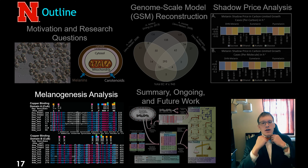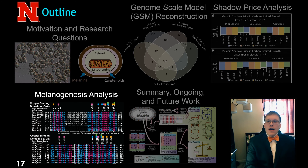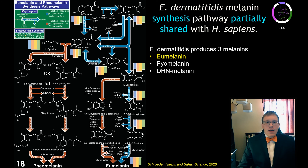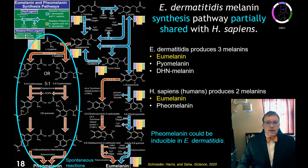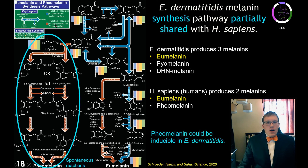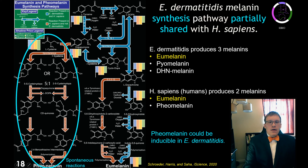Looking more specifically at melanogenesis, part of the pathway — specifically eumelanin production — is shared between humans and Exophiala. Humans produce two kinds of melanins: eumelanin and pheomelanin. Our modeling results suggest that pheomelanin could be inducible in Exophiala, because all reactions leading to pheomelanin from dopaquinone, which is already produced by Exophiala, are spontaneous reactions. So we should be able to induce that in Exophiala, and we are hoping the melanogenesis pathways will be similar between the two organisms.